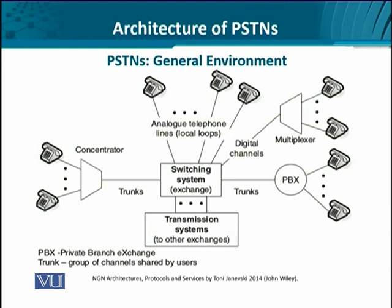Looking at analog telephone lines, it is straightforward — these telephones are connected directly into the exchange. On the right-hand side, we see telephones which are connected through multiplexers. Multiplexers are digital devices which connect these telephones over digital lines, so here the telephones are connected in the subscriber loop in a digital manner.